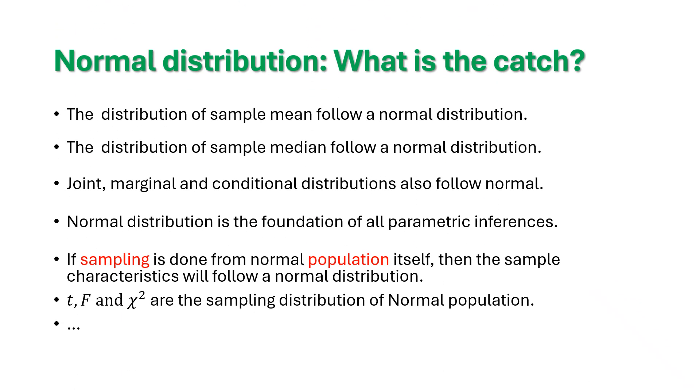What is the catch? The distribution of sample mean follows normal distribution. Sample median also follows normal distribution. Even conditional and marginal and even joint distribution, if the distributions are considered to be normal, then all these become normal. Normal distribution is the foundation of parametric inferences. And if sampling is done from normal, then of course, definitely that is going to be normal only.